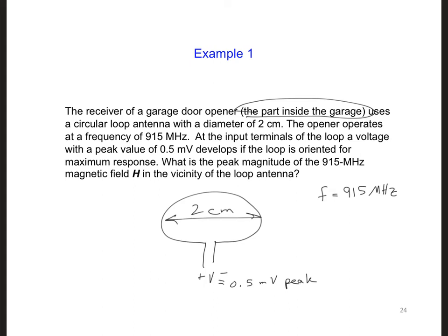And so when this antenna, which is what it is, this loop is oriented in a certain direction, it will receive more of the incoming signal from the button transmitter.